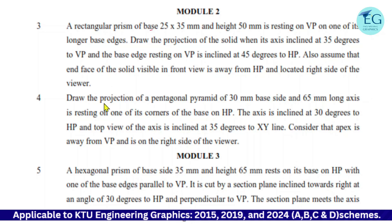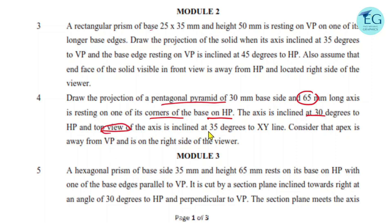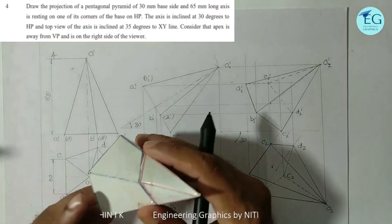Question number four: draw the projections of a pentagonal pyramid of 30mm base edge and 65mm long axis, resting on one of its corners of the base on HP. The axis is inclined at 30 degrees to HP and the top view of the axis is inclined at 35 degrees to XY line. Consider that the apex is away from VP and is on the right side of the viewer. This is a solid pentagonal pyramid.